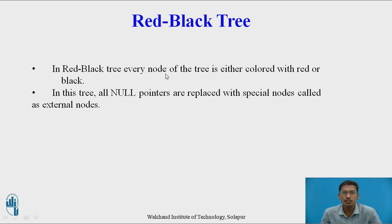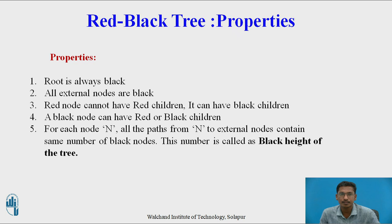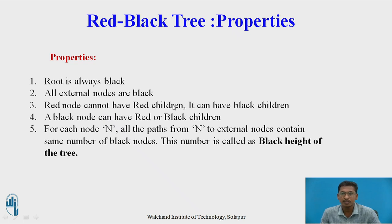In a red-black tree, every node is either colored red or black, and all null pointers are replaced with special nodes called external nodes. The properties of a red-black tree are: the root is always black; all external nodes are black; a red node cannot have red children but can have black children; a black node can have red or black children; and for each node n, all paths from n to all external nodes contain the same number of black nodes, and this number is called the black height of the tree.